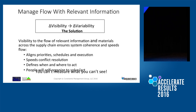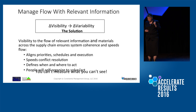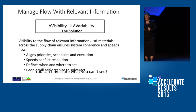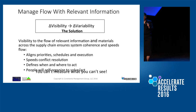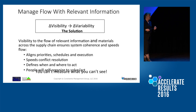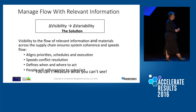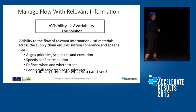Why do we want that? Because it aligns priorities. A balanced scorecard, by definition, is putting in conflicts. We want alignment of priorities, alignment of schedules, and alignment of execution.